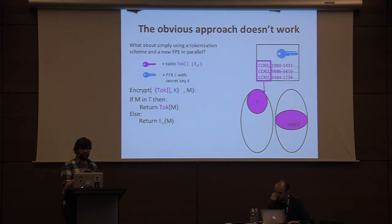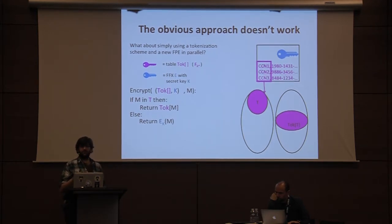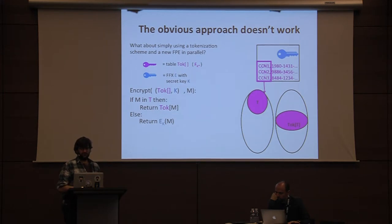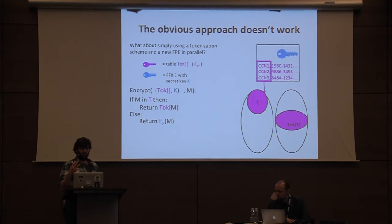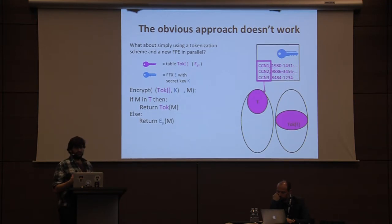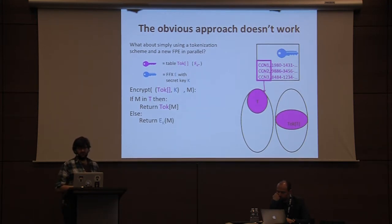In the next few slides, rather than referring to F_K* abstractly, we think of it as a token table — essentially a big attribute-value map. There's an obvious approach: use a tokenization scheme and a new FPE scheme in parallel. When you want to encrypt a point already in the token table, return its value; if the point is not in the token table, just encrypt it with FPE.